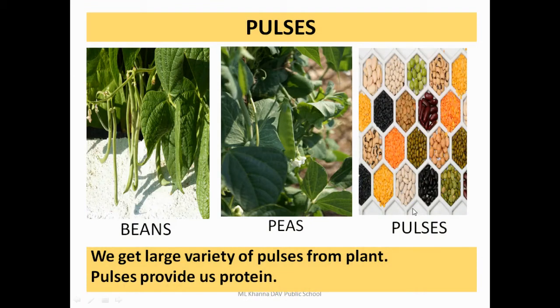The next category is pulses. We get a large variety of pulses from plants, and plants provide us protein. These are all the pulses we are getting from plants.